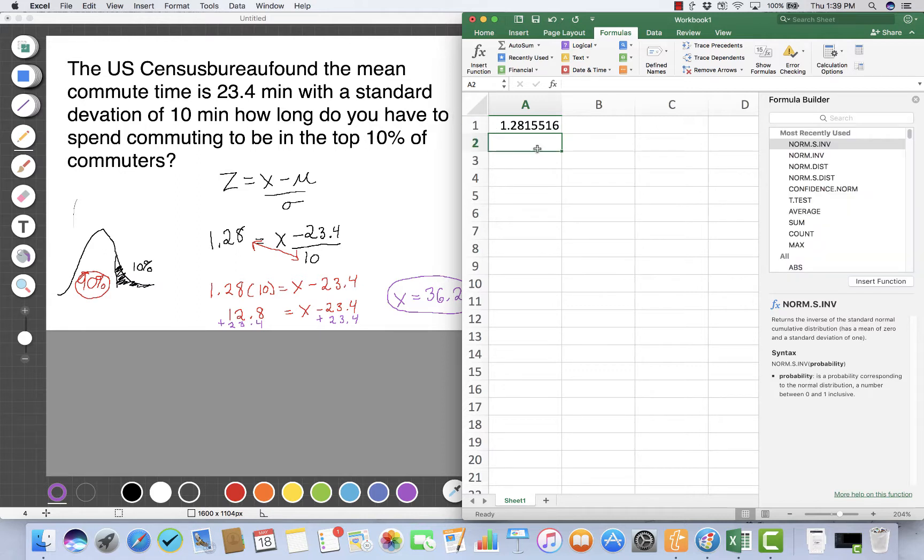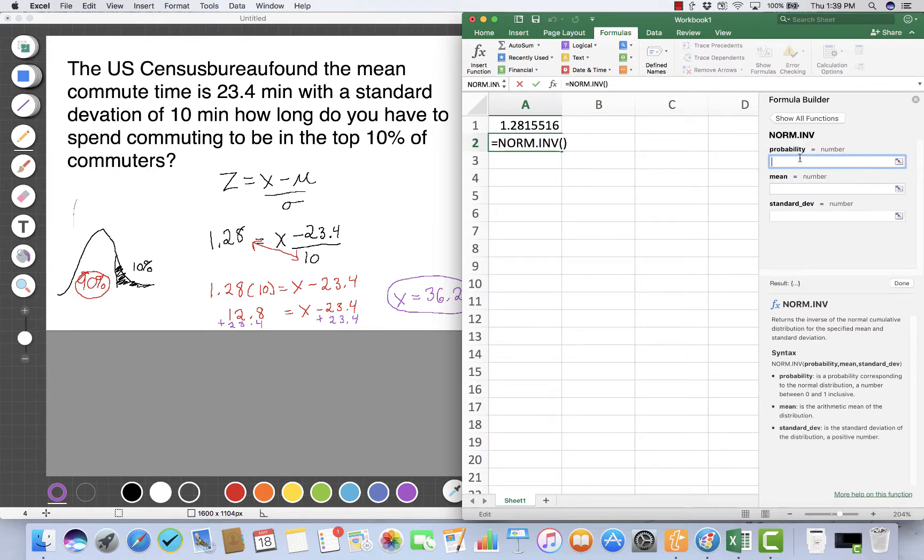When you use norm.inv (I-N-V without the S), you enter the mean and standard deviation. You'll get a slightly different solution because Excel carries all decimal places. We enter the probability 0.9, the mean of 23.4, and the standard deviation of 10.